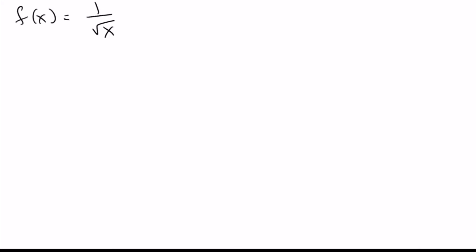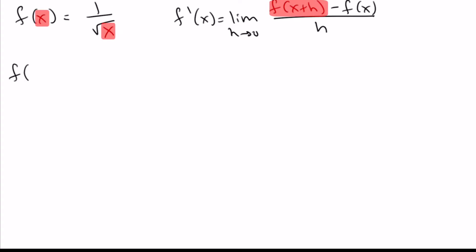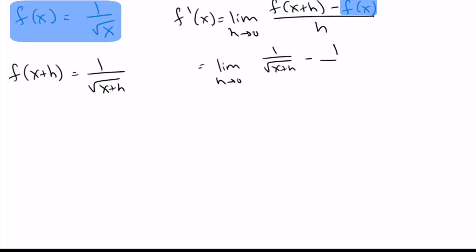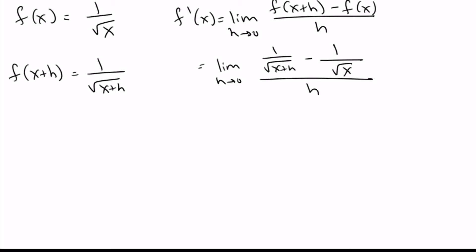This next one can seem pretty difficult just because there's both a fraction and a square root, and there is a little more to it, but it's very doable. We'll start, as usual, with just the limit definition of the derivative. Our very first step is dealing with f of x plus h — that means taking any x's and replacing them with x plus h. We plug that in: replace x with x plus h. f of x is just in the top left corner — that's what we started with — and still over h.